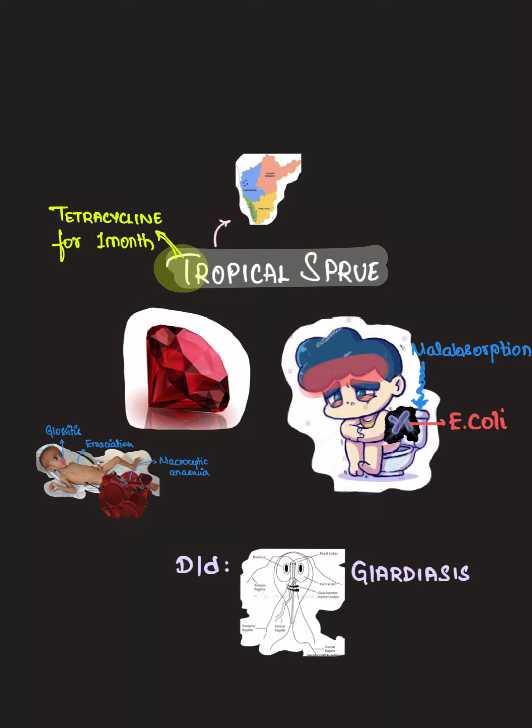Since there is a bacterial infection, you have to symptomatically treat the person with an antibiotic. The antibiotic of choice is tetracycline — 250 mg should be given and it has to be continued for 4 weeks.